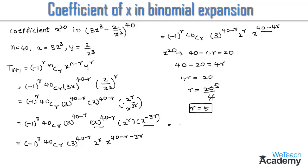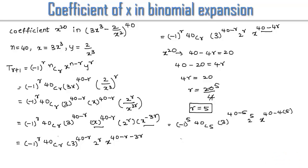Substituting r equal to 5, we get minus 1 whole power 5, into 40C5, into 3 power (40 minus 5), into 2 power 5, into x power (40 minus 4 into 5). Since 5 is an odd number, minus 1 whole power 5 equals minus 1. So this becomes minus 1 into 40C5 into 3 power 35 into 2 power 5 into x power 20.